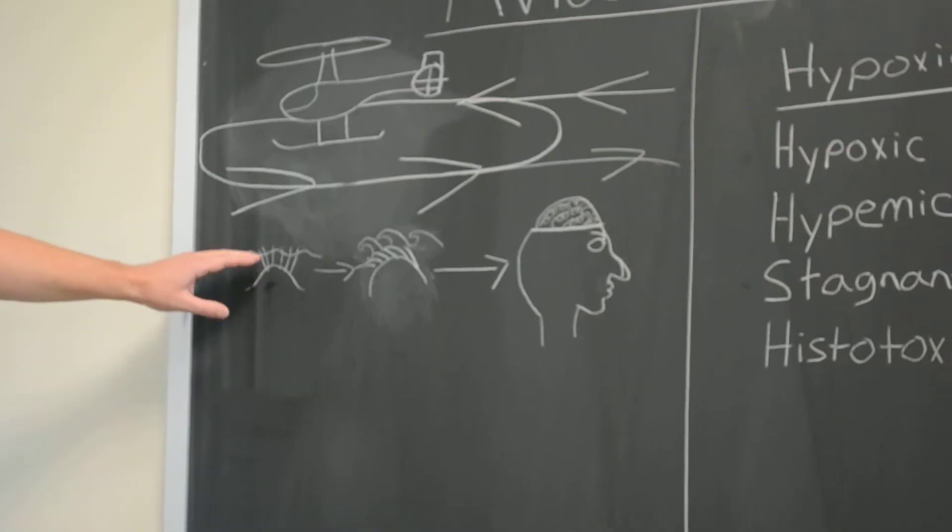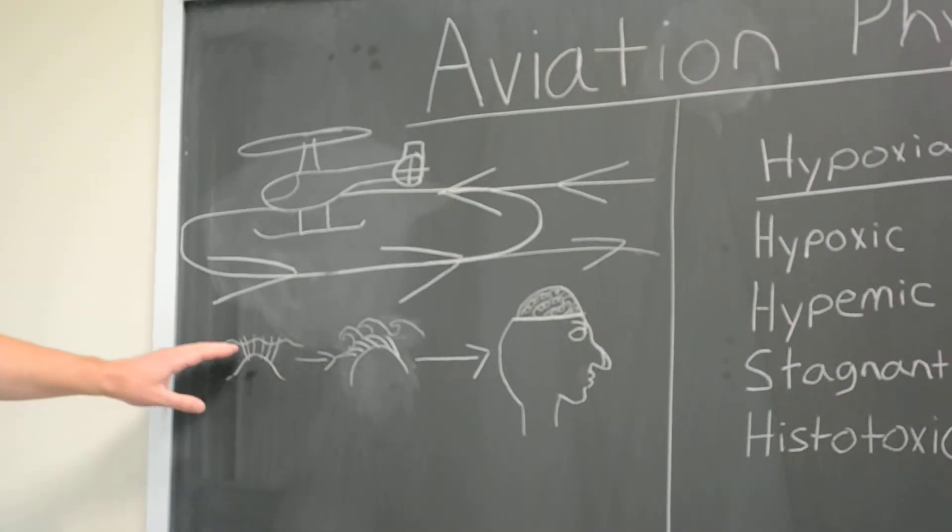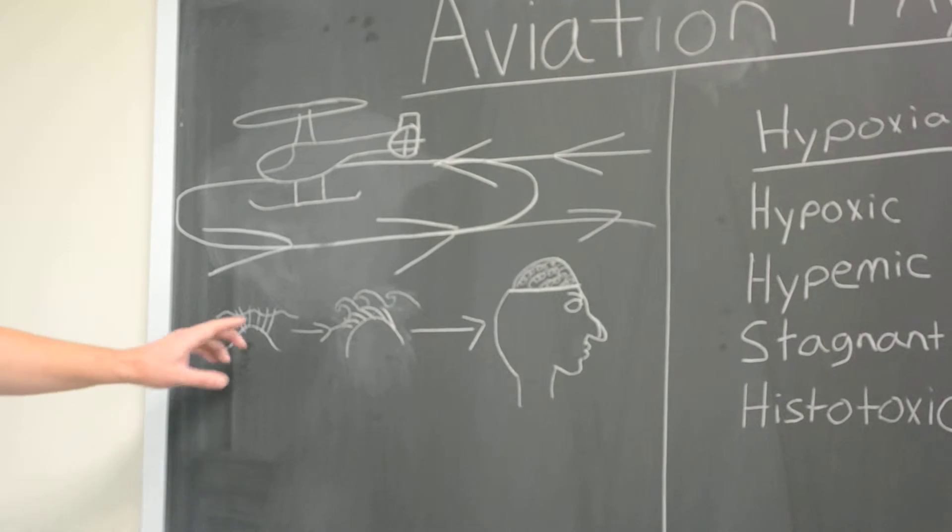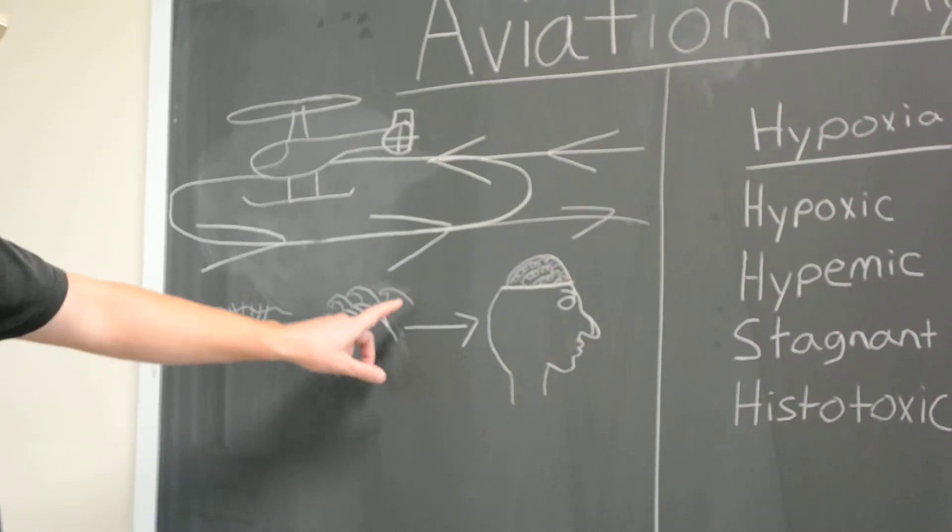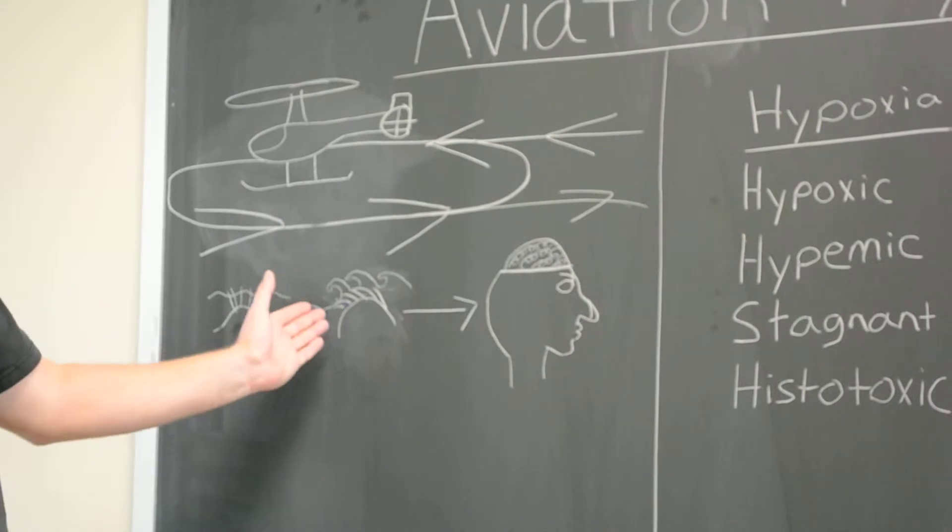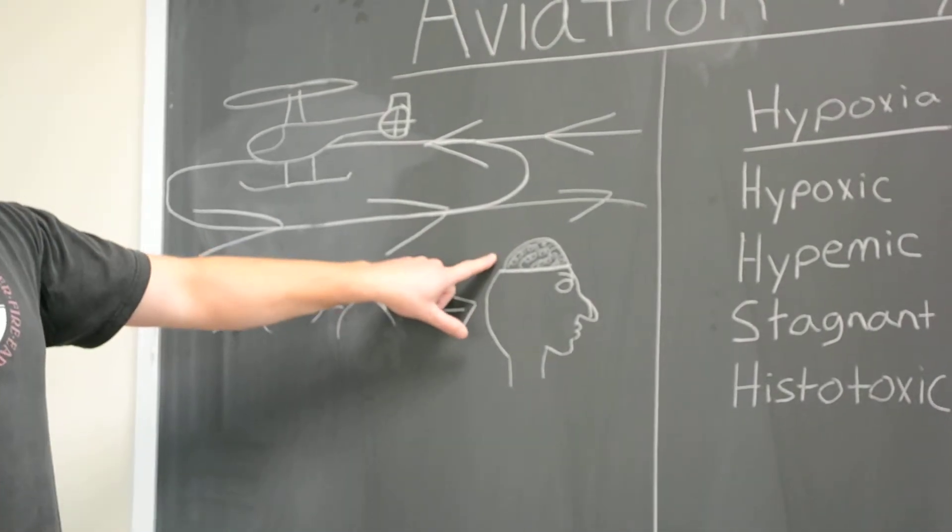As you're flying straight and level, the fluid in the canals will be stagnant and the hairs won't register anything. As you enter the turn, the fluid will then flow over the hairs causing them to lay down which then your brain picks up as a turn.